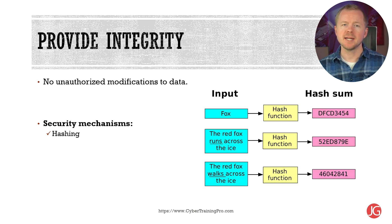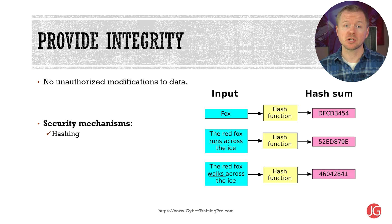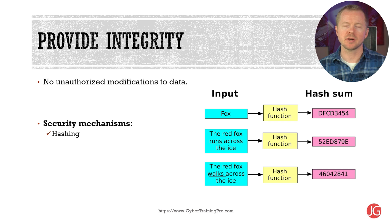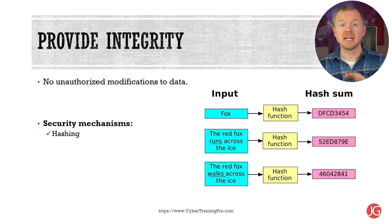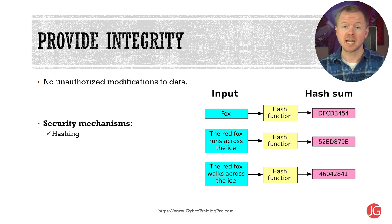The second part of the CIA triad is integrity, which means we can say with certainty the data hasn't been changed unless it's been done by an authorized user. When an unauthorized change occurs, we say the data has lost its integrity. The primary method for verifying data integrity is hashing. Hashing runs a mathematical algorithm against data, creating a unique value. If any part of that data changes, the hash value will be different when we run the algorithm again. If the data hasn't changed, the hash value is always going to be the same.